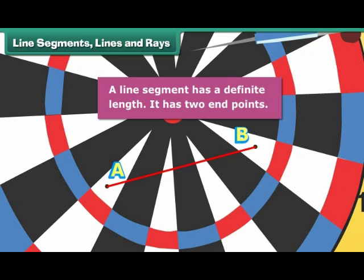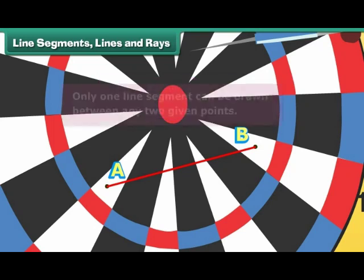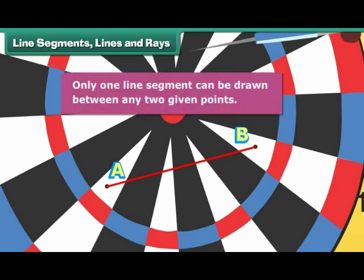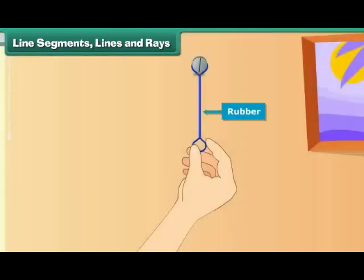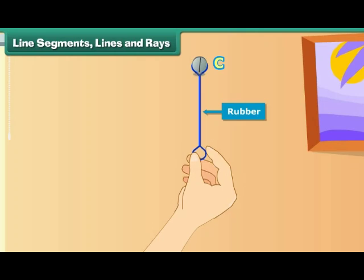A line segment has a definite length. It has two end points. Can we draw another line segment between two points A and B? No! Only one line segment can be drawn between any two given points. Look at this thin strip of rubber. Let us nail it to the wall and name the point C. The other end of the rubber is free.